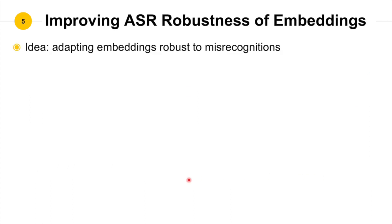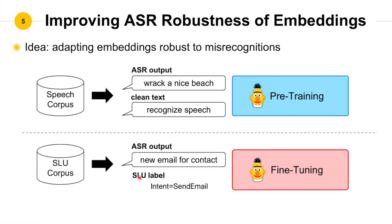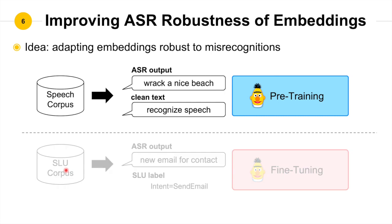The idea is to tell the model about the correct text behind the erroneous ASR output. Our training strategies can be divided into two stages: the pre-training stage using a speech corpus, and the fine-tuning stage with an SLU corpus. Let's first look at the pre-training stage.